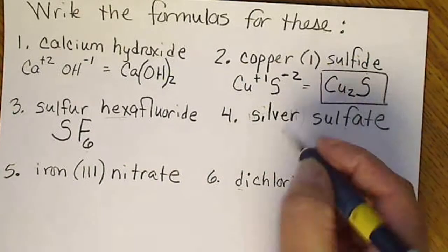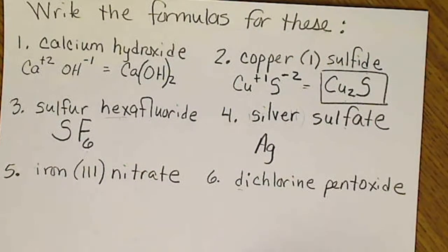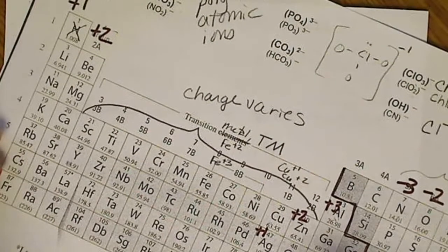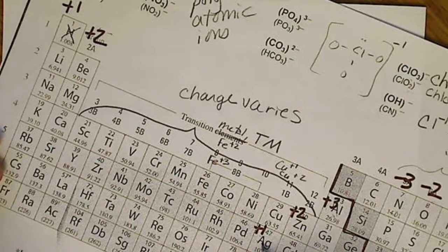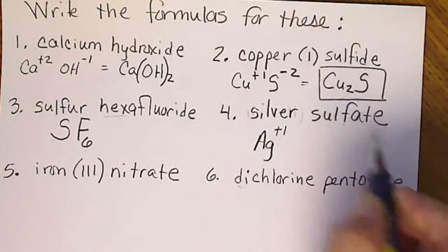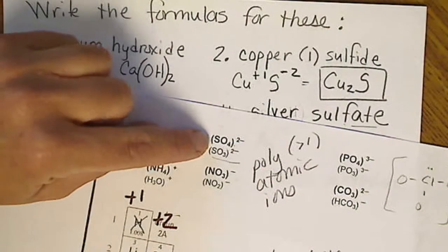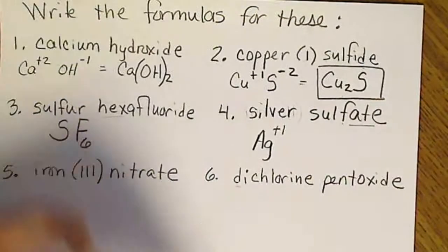Silver sulfate: silver, I'm going to write down Ag, find it on the periodic table to write its charge. Silver has a +1. Sulfate is one of our polyatomic ions, so SO4 with a -2 charge.